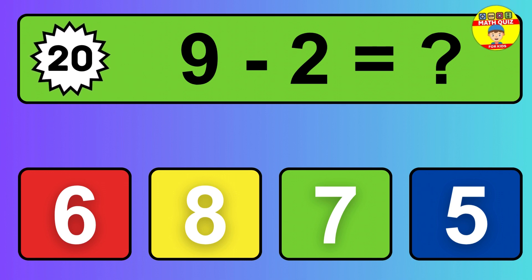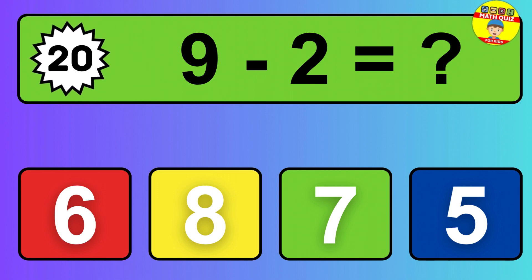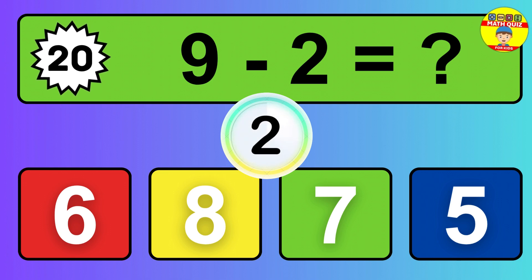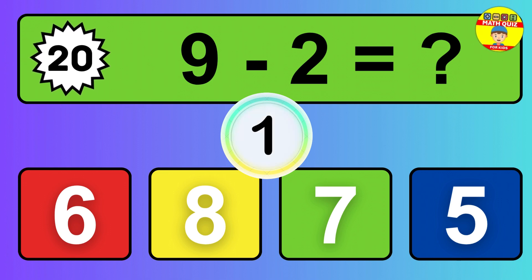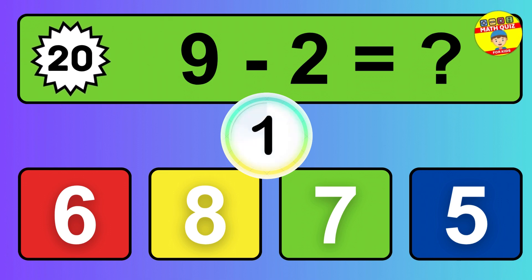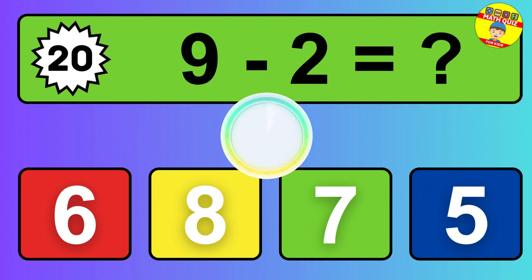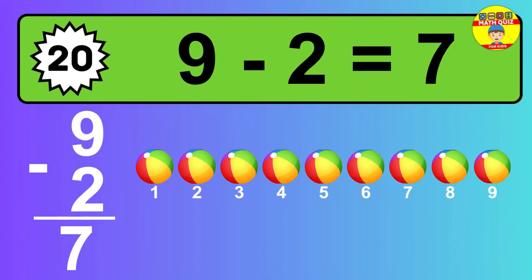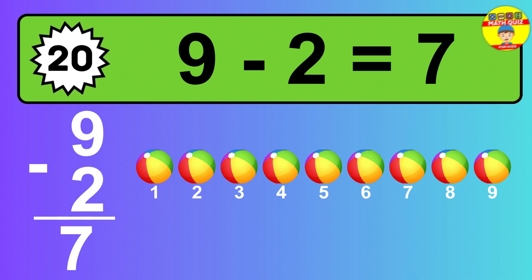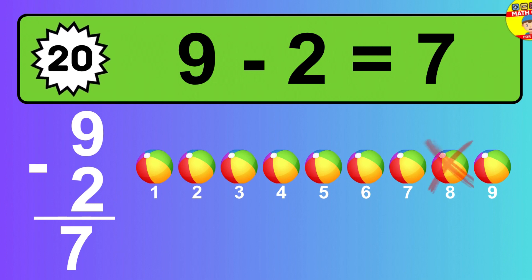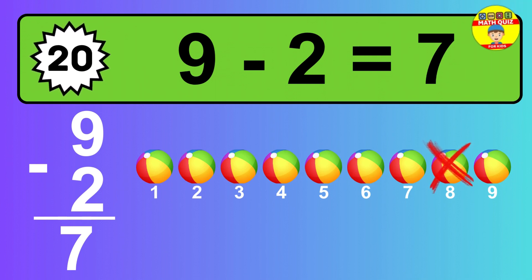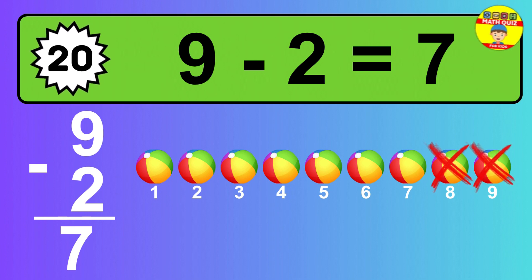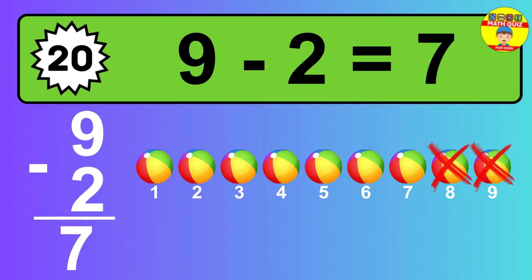Question 20. 9 minus 2 equals what? The answer is 9 minus 2 is 7. Let's count it. 1, 2, 3, 4, 5, 6, 7.